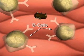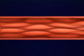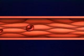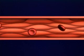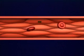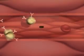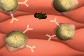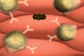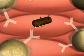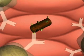B cells are one of the two types of white blood cells that make antibodies. When a bacterial cell enters the bloodstream, proteins on its surface act as antigens and trigger a response by the immune system. These antigens will bind to the unique B cells that have the corresponding antibodies on their surfaces.